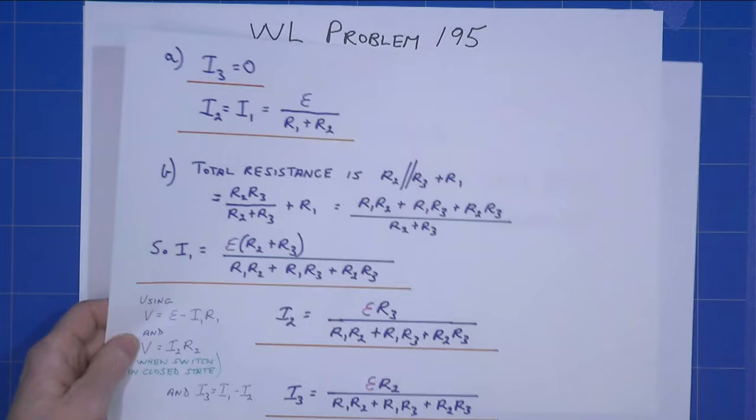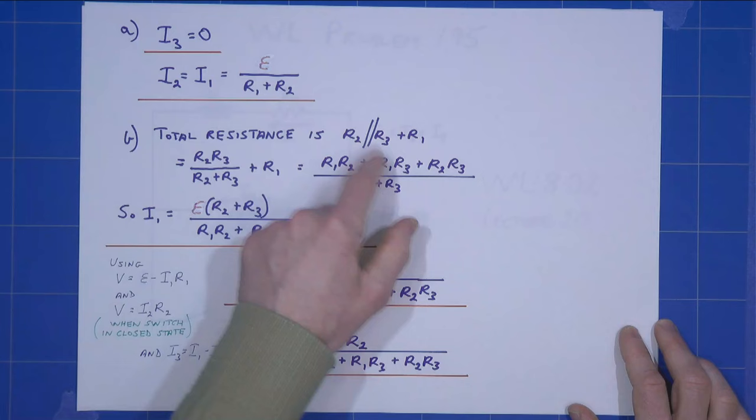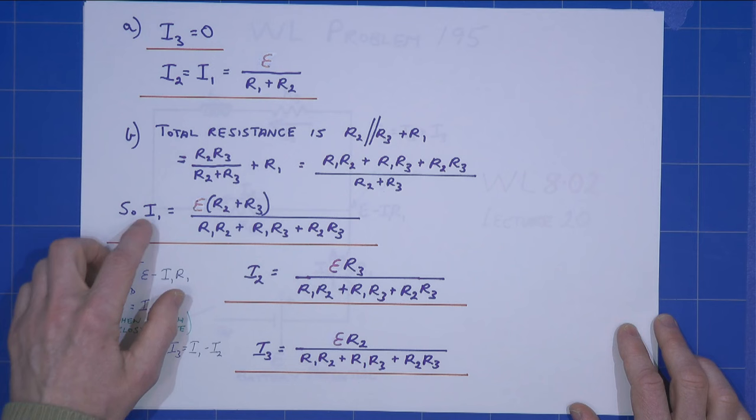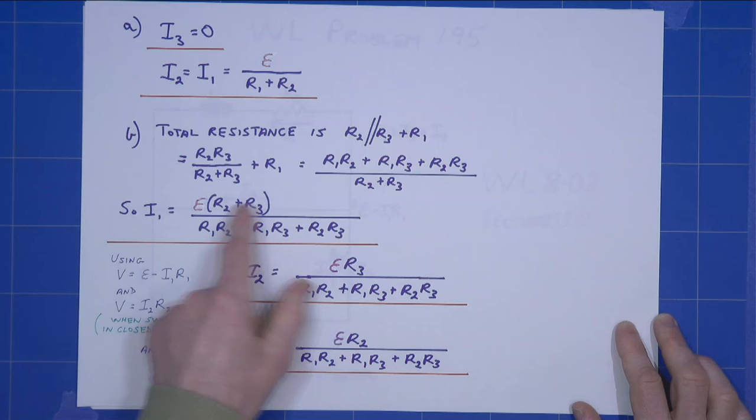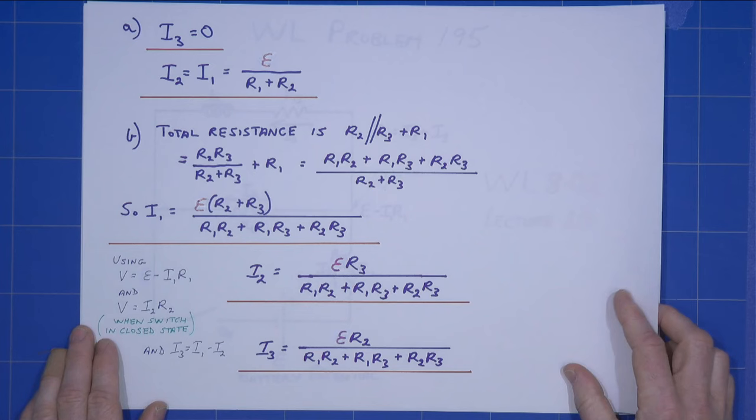the total resistance determines i1. OK, the total resistance, r2 plus r3 in parallel plus r1, gives you that expression for the total resistance, and so i1 is simply E divided by the total resistance, Ohm's law.